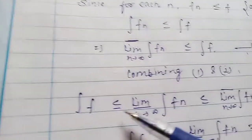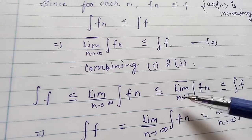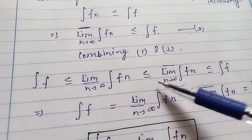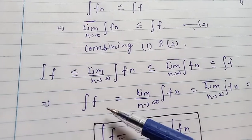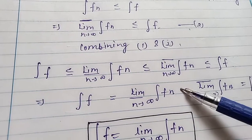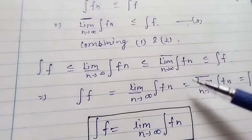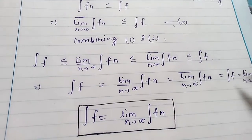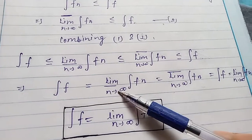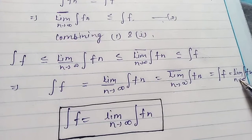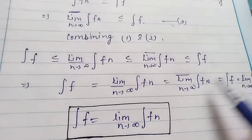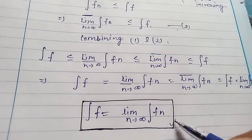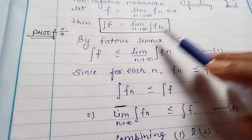Combining the first and second equations: the integral of f is less than or equal to the limit inferior of the integral of fn, which is less than or equal to the limit superior of the integral of fn, which is less than or equal to the integral of f. Therefore, all terms are equal, and we get: the integral of f equals the limit as n tends to infinity of the integral of fn. This is exactly the condition we had to prove.